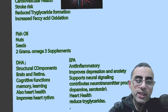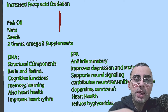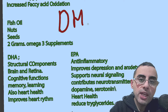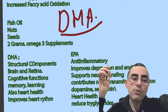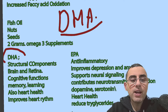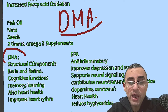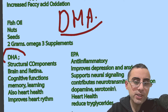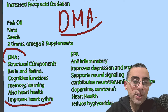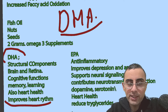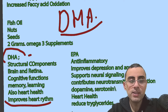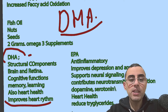An important question is: which is better, EPA or DHA? Both are part of omega-3. DHA is needed more for structural components — for the brain, retina, heart, and for memory, learning, and cognitive functions. It also improves heart rhythm. For older adults, DHA is especially important because it improves cognitive function and decreases the risk of Alzheimer's disease.